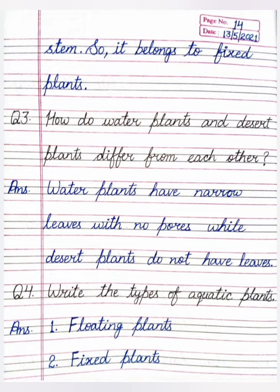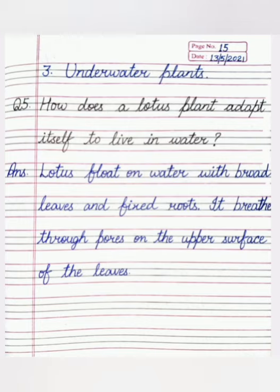Our next question is: write the types of aquatic plants. Aquatic plants ki types kaun si hain? There are three types of aquatic plants. First is floating plants, second is fixed plants, and the third one is underwater plants.